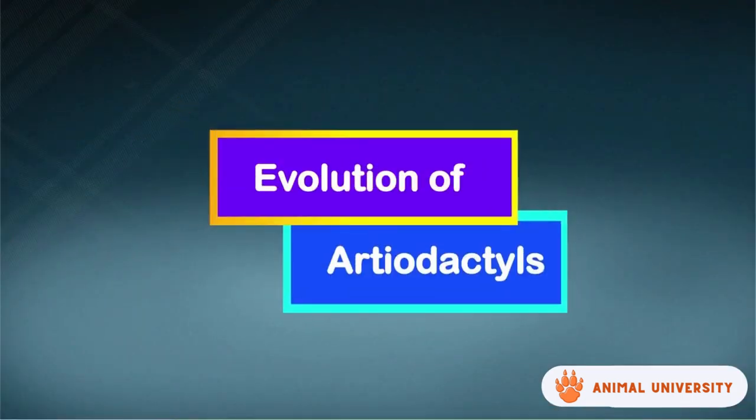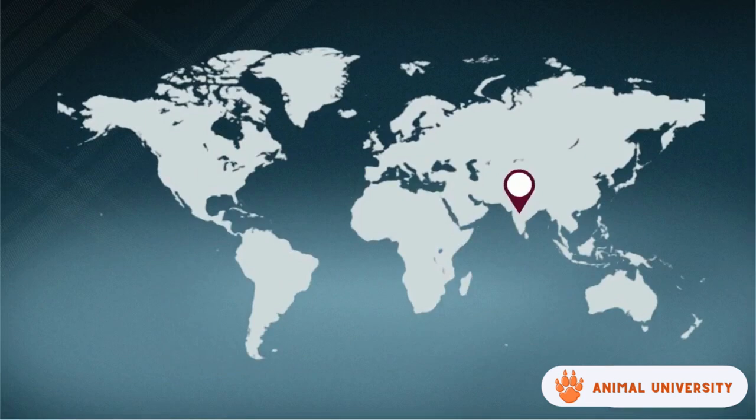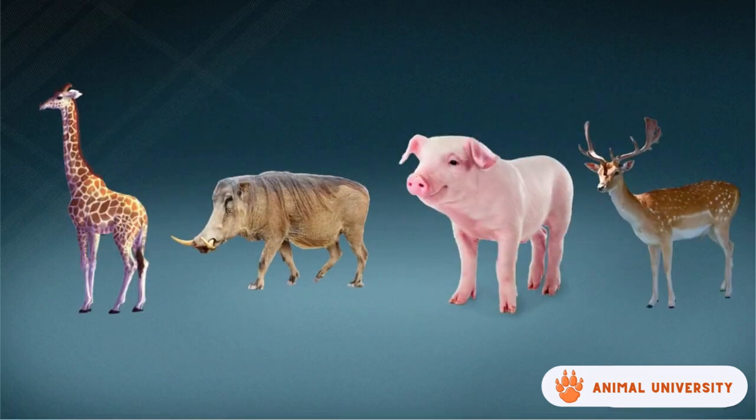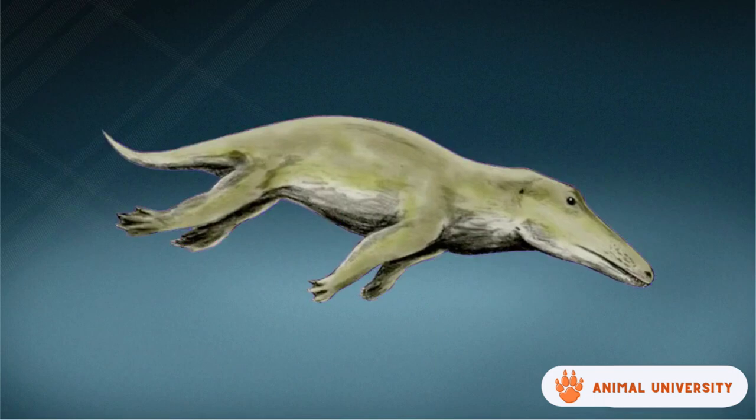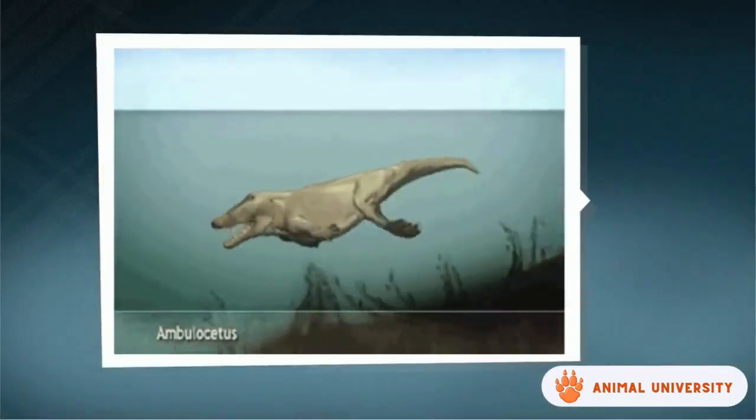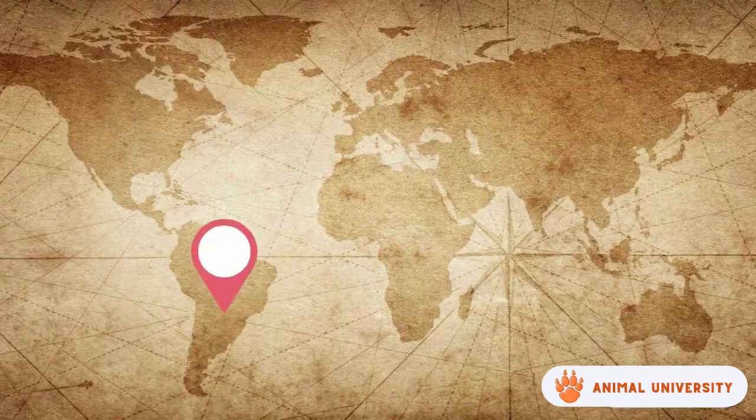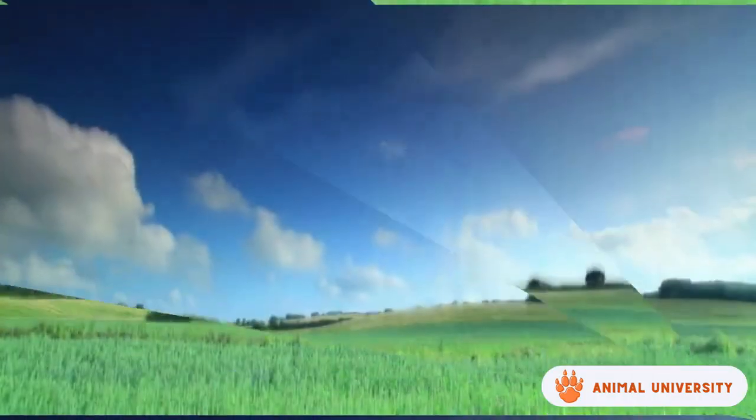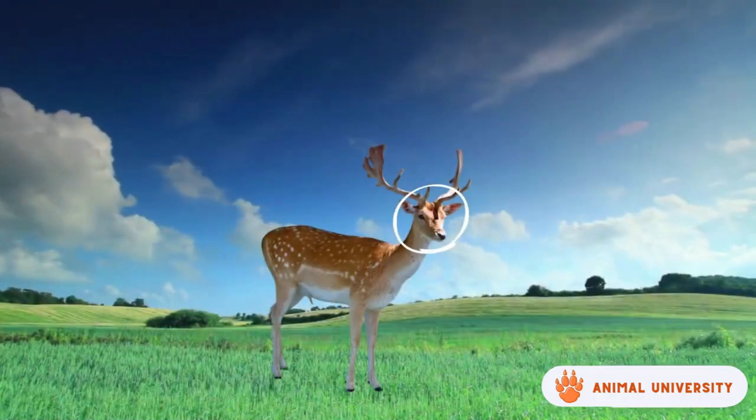This gut bacteria breaks down the cellulose in grass plants into nutrients and also helps provide energy to the pecorans by its metabolism. Getting back to the evolution of artiodactyls, cetaceans evolved in the Indian subcontinent around 50 million years ago when their ancestors, Ambulocetus, started hunting prey underwater and on land like crocodiles and eventually lost their limbs.